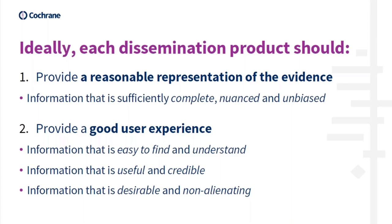So when we develop different products, what we try to achieve is to provide a reasonable representation of the evidence. We want to provide a representation that's sufficiently complete, nuanced, and unbiased. No matter what kind of dissemination product you're making, that should be a goal. But in addition to that, we also want to provide a good user experience — we want the information to be easy to find, we want people to understand it, and we also want to give information that's useful and credible. Last but not least, we want the information to be desirable and non-alienating — we want people to actually want to read whatever product it is we've made and feel like it's for them.